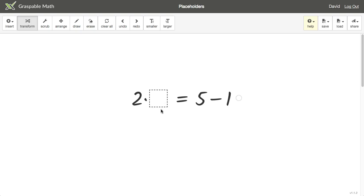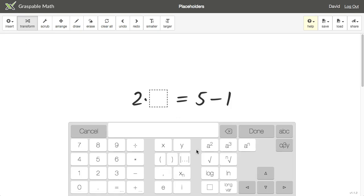Placeholders are a way for you to create open-ended questions in Graspable Math. Create an expression containing any number of placeholders to represent what could be numbers, variables, or more complex expressions.